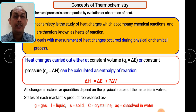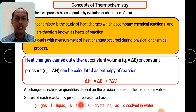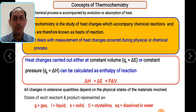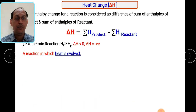Whatever state we write for reactants and products, they are represented as: G for gas, L for liquid, S for solid, capital C if it is crystalline, and Aq if it is dissolved in water or in aqueous solution. Remember we have to mention the physical state in order to study the heat of reaction.